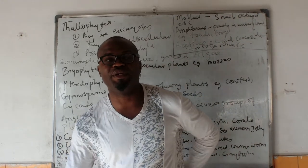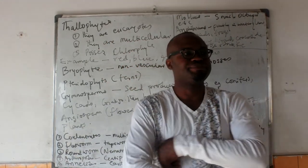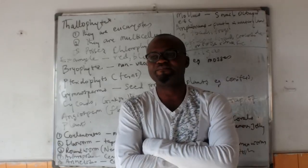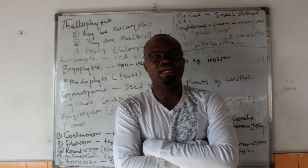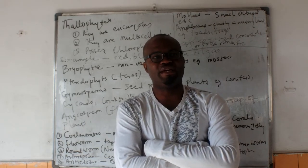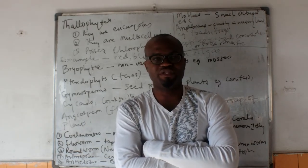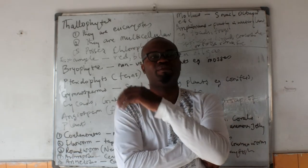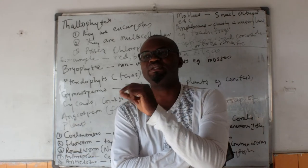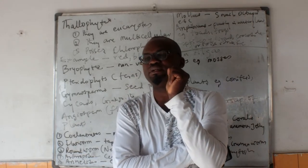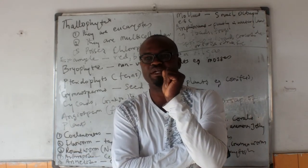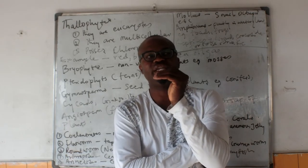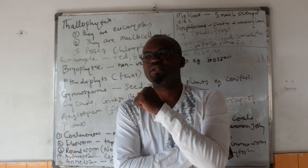Hello and welcome. Today we are going to be looking in detail at the classification that we looked at in previous classes. We learned that there are five major kingdoms for the classification of living things, and those five major kingdoms are: the kingdom Monera, consisting of single-celled organisms like bacteria, the kingdom Protista, and the kingdom Fungi.